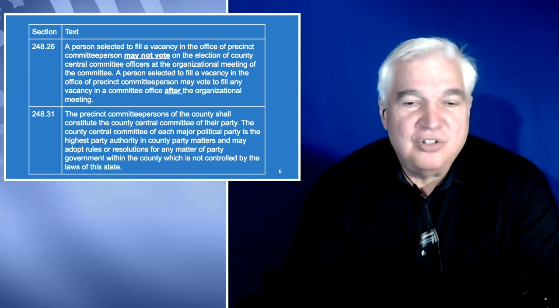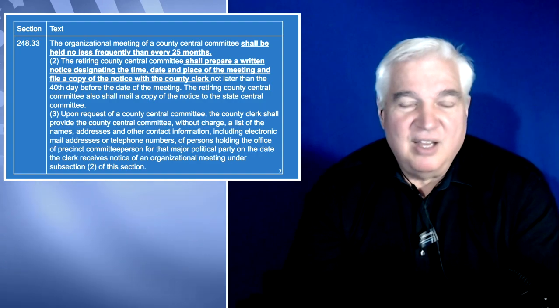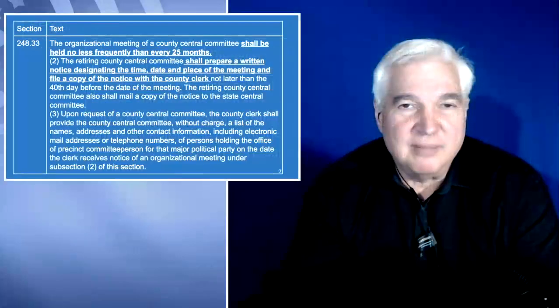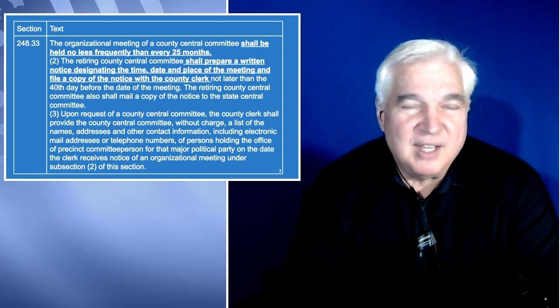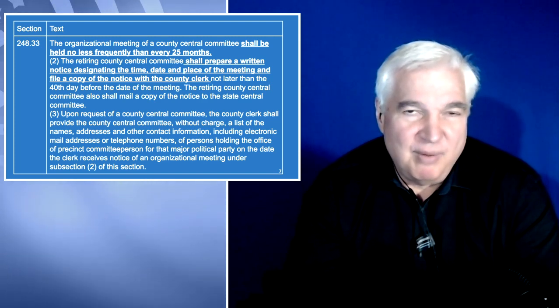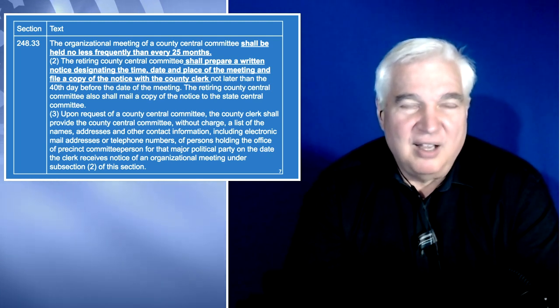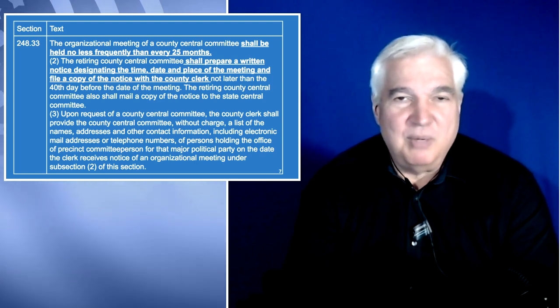Section 248.33: the organizational meeting of a county central committee shall be held no less frequently than every 25 months. So every 25 months or less, a county has to have a reorganization. Notice that it does not say it has to happen in December, November, or January following the general election — just within 25 months. Most counties used to reorganize between November and February, but some have deviated and now fall completely off that cycle.